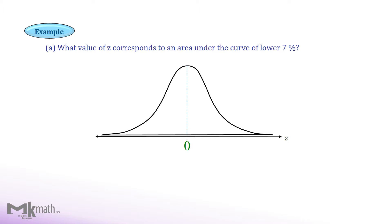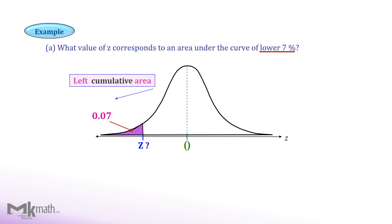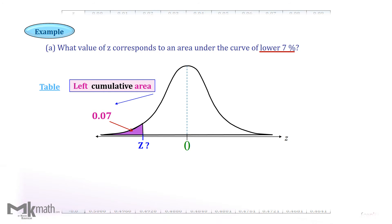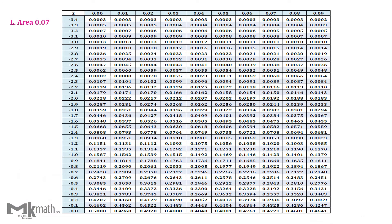First, find the given area in the question. It says lower 7%. So we should use the left tail area of 7% or 0.07. Therefore, we find the z-score that corresponds to the left cumulative area of 0.07.